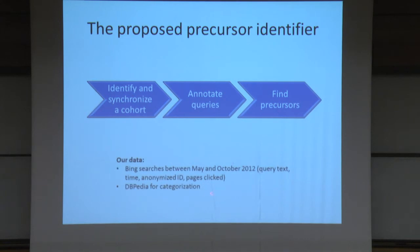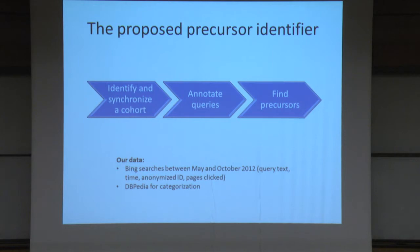I'll talk about data that we collected from Bing searches in the US over a six-month period. What we have is the query text — that's usually about three words. We have the time that the query was issued, an anonymized identifier of the user, meaning I can say that two searches were made by the same person but I don't know who that person is. We also know which pages they clicked on — from the pages that you're presented, which ones did you actually click on? We also use DBpedia, which is a derivative of Wikipedia, in order to do the categorization.